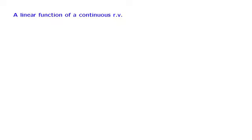We now move to the case of continuous random variables. We will start with a special case where we want to find the PDF of a linear function of a continuous random variable. We will start by considering a simple example and study it using an intuitive argument, and afterwards we will justify our conclusions mathematically.